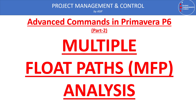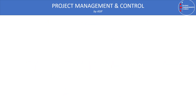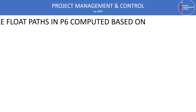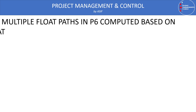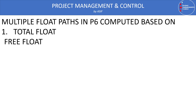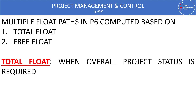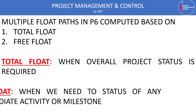When we have a project with several activities, there is a possibility of more than one float path to complete the project — these are called Multiple Float Paths. In Primavera P6, we can compute the multiple float path using either total float or free float. When we need the overall status of the project, we use total float, which determines the float for the whole project.